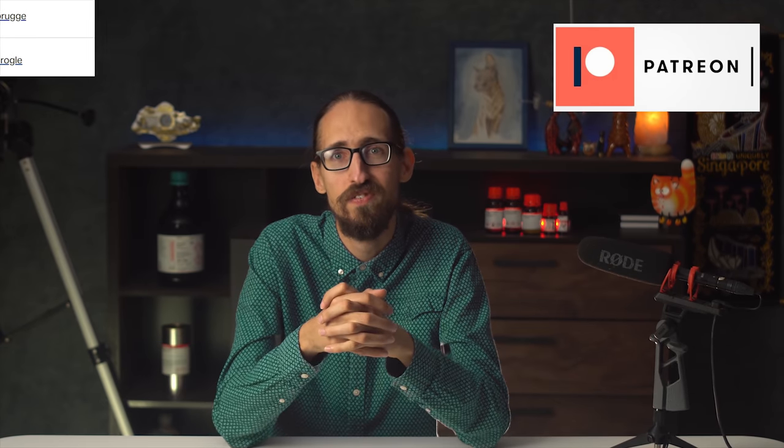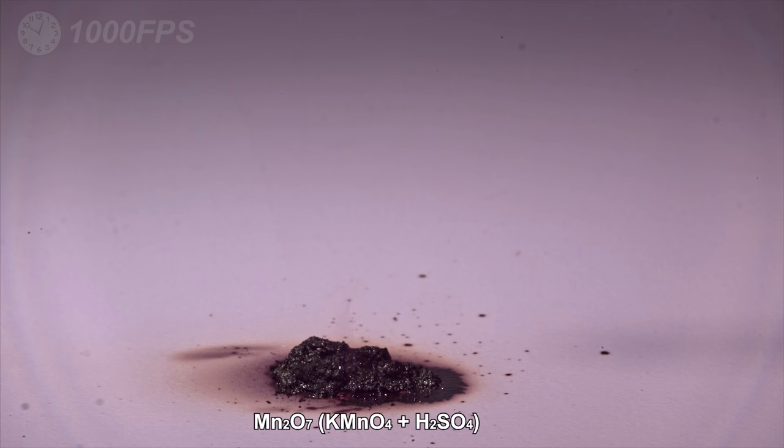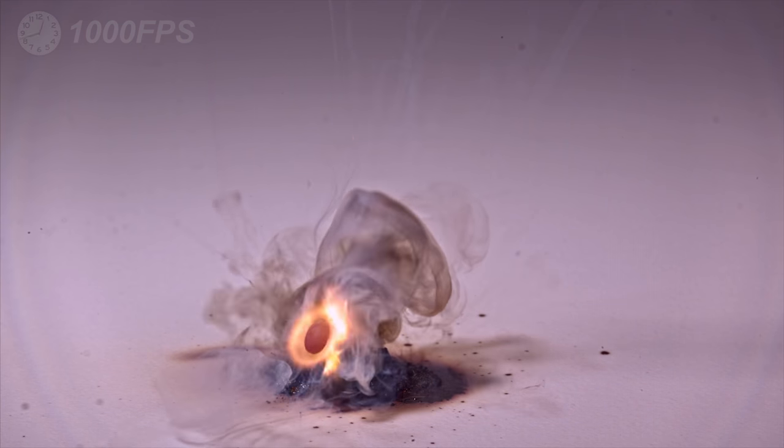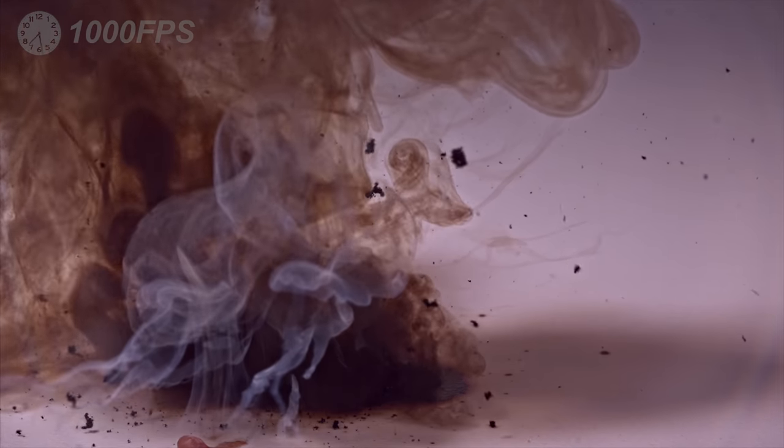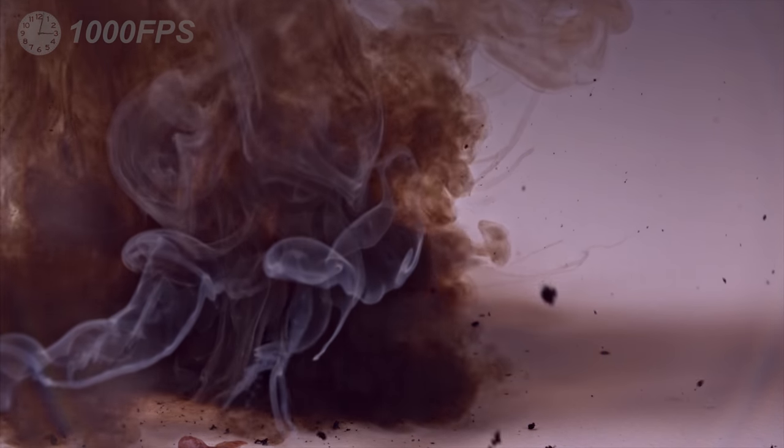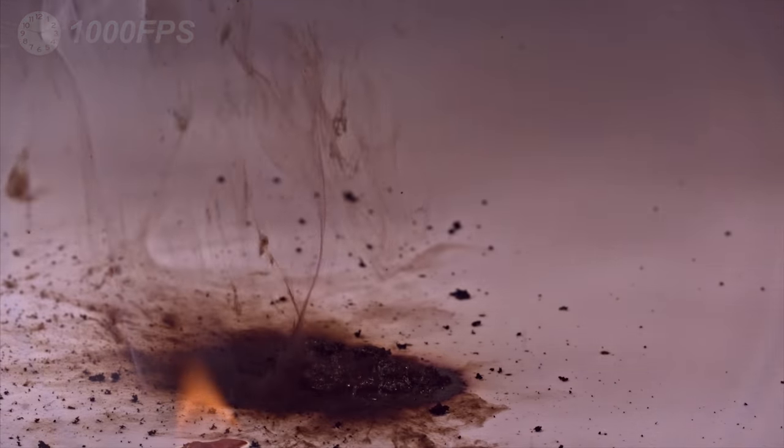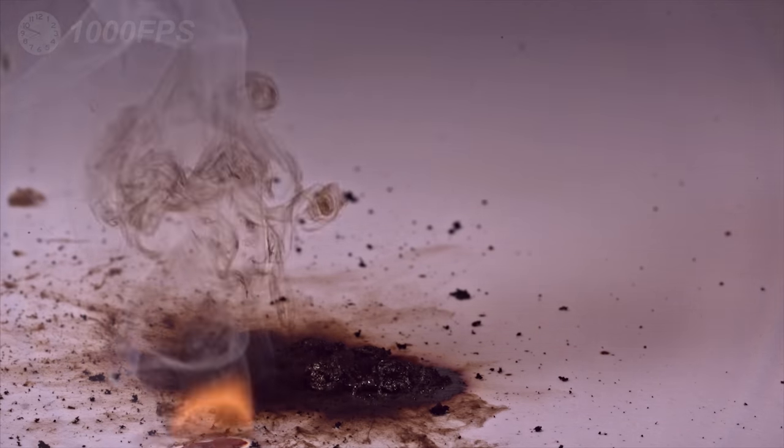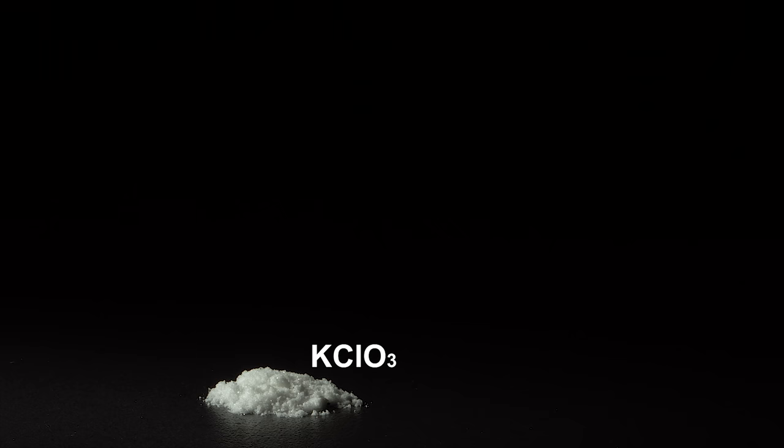And now let's enjoy the rest of the video. Manganese heptoxide instantly ignites white phosphorus on contact. If we drop some white phosphorus in carbon disulfide solution on potassium chlorate, carbon disulfide will evaporate, and there will be an explosion so violent, it will be hard to capture it even on a high-speed camera.